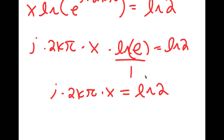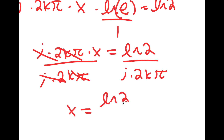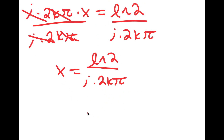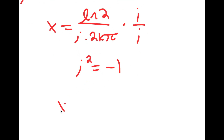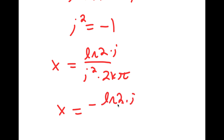Now to solve this, I'm going to divide both sides by i times 2k pi. These cancel out, and I'm left with x is equal to ln 2 over i times 2k pi. Since i squared is equal to negative 1, I'm going to multiply both sides by i. So I get x is equal to ln 2 times i over i squared times 2k pi. And since i squared is negative 1, I get x is equal to negative ln 2 times i over 2k pi.